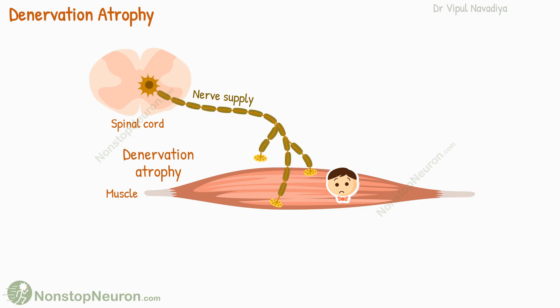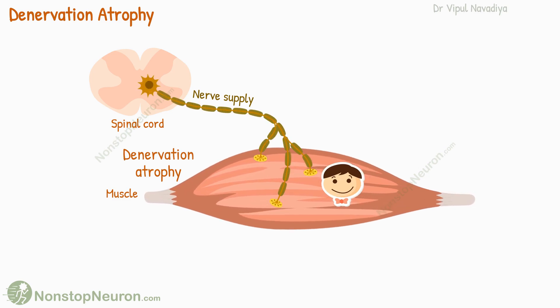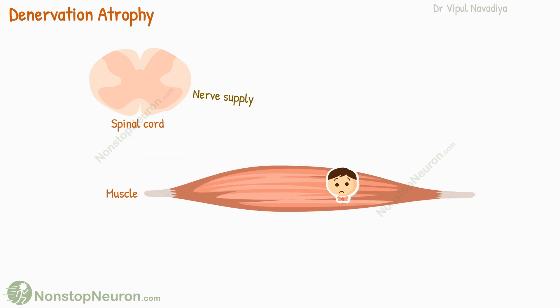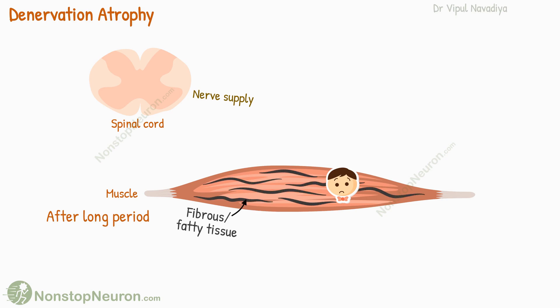If the nerve supply regrows rapidly, the muscle may initially recover. However, if the denervated state lasts for a long period, most of the muscle fibers are destroyed and replaced by fibrous or fatty tissue. After this, even if the nerve supply is restored, the fibers do not regenerate.